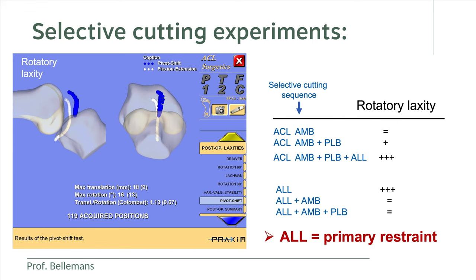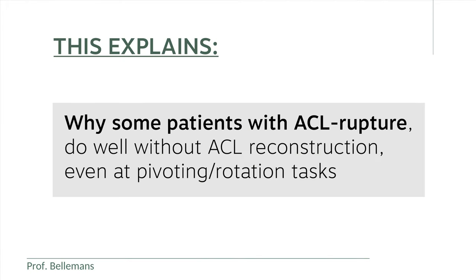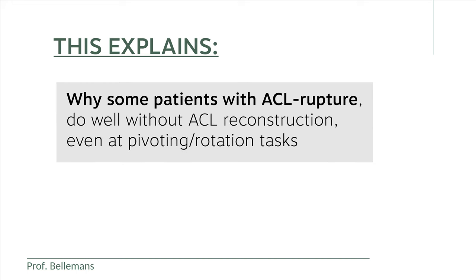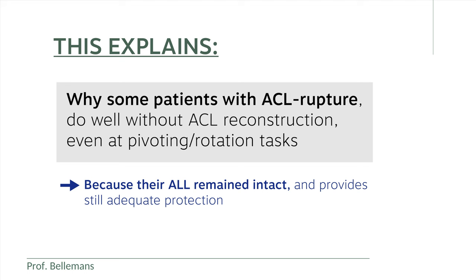To summarize: for rotational stability of the knee we have two restraints — the ALL and the ACL's posterolateral bundle — that help each other, of which the anterolateral ligament is the most important. This conclusion explains things we did not understand in the past. For example, we did not understand why some patients with ACL rupture do well without ACL reconstruction, even during pivoting and rotation tasks. We always believed the ACL was the only protector against rotational instability. Now we know why: in these patients, the ALL remained intact and still provides adequate protection against rotation.